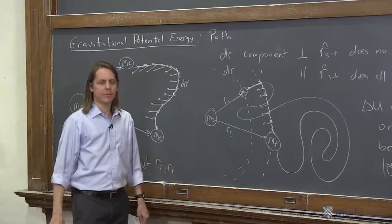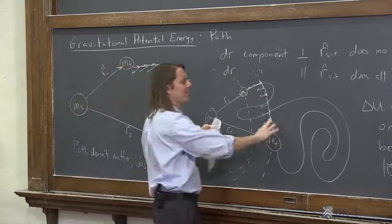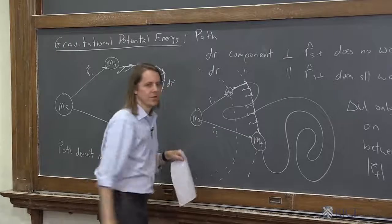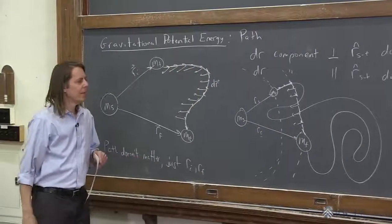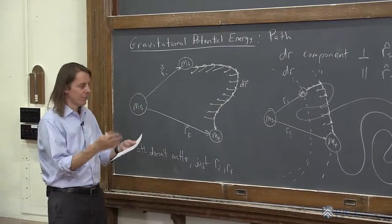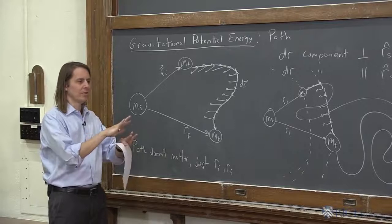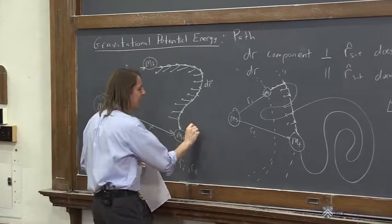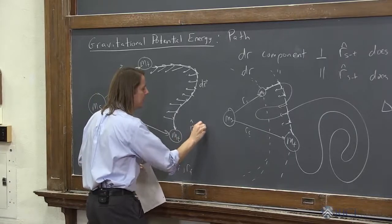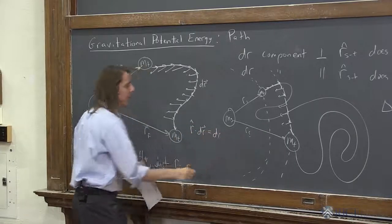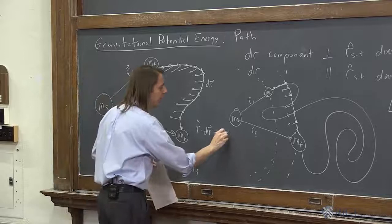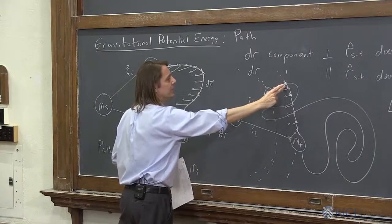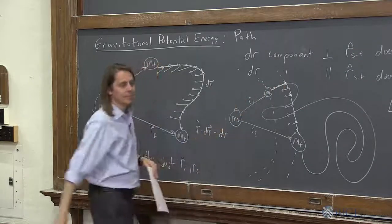Doesn't really care how you get there. So if you're ever given a complicated problem where they give you some weird path, they're probably just trying to get you to realize it's only the change in r that matters. And this also shows up when we wrote the integral before. The reason we took that dot product and just called this thing dr is basically this reason. The reason we could say r hat dot dr just equals dr is because all that matters is this component here. And that's really just dr.